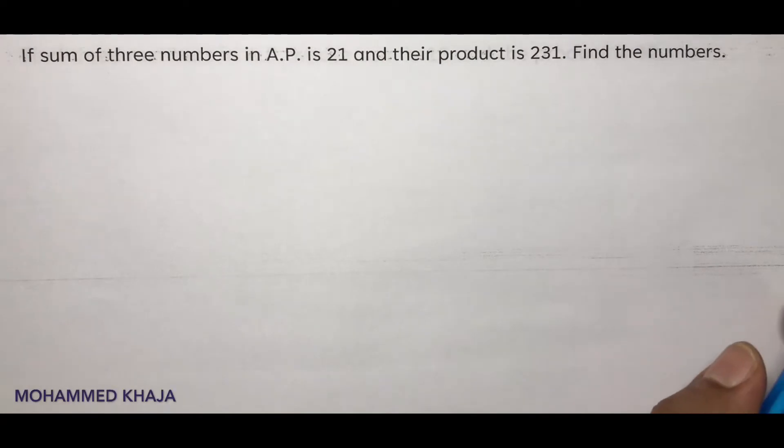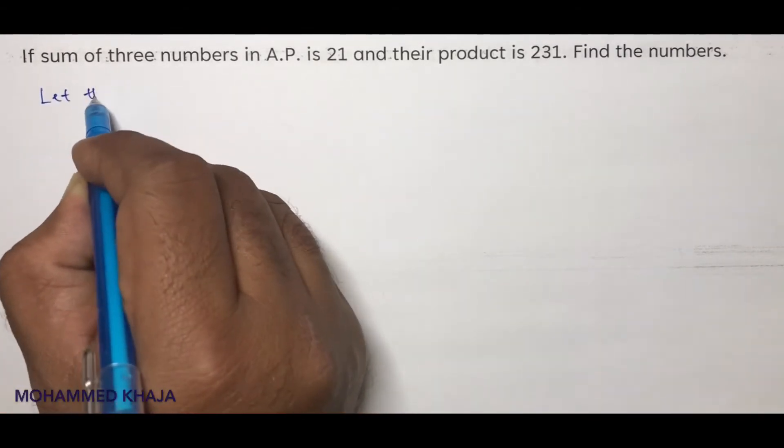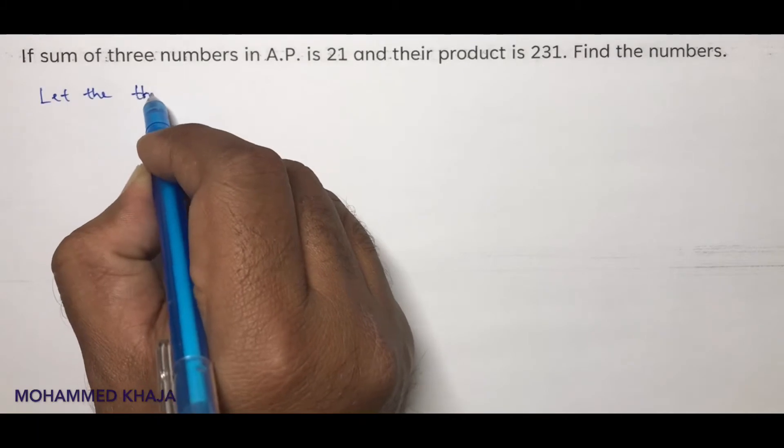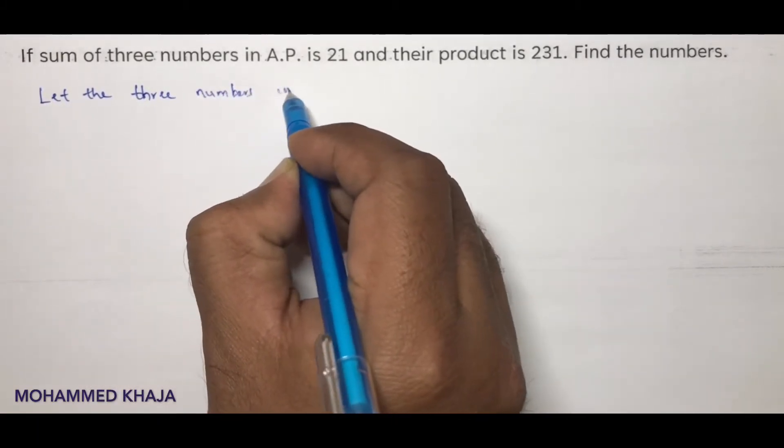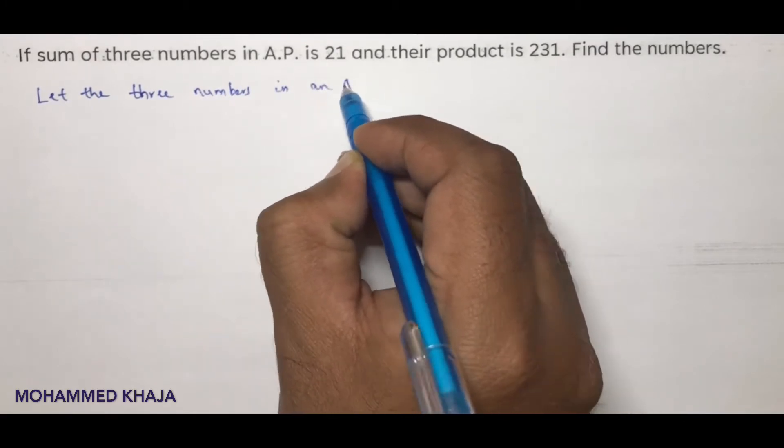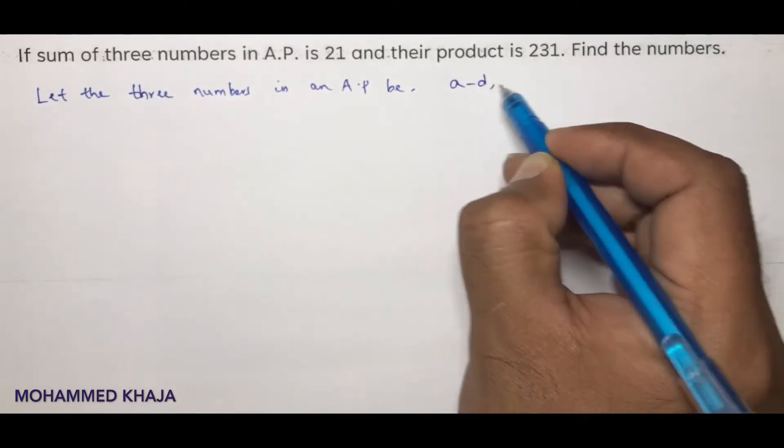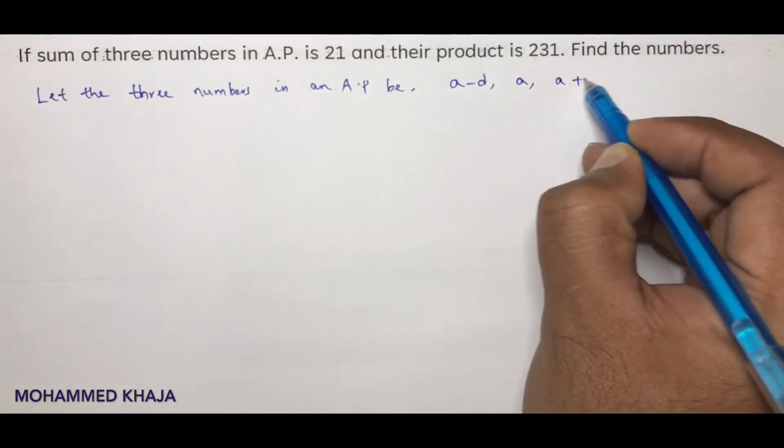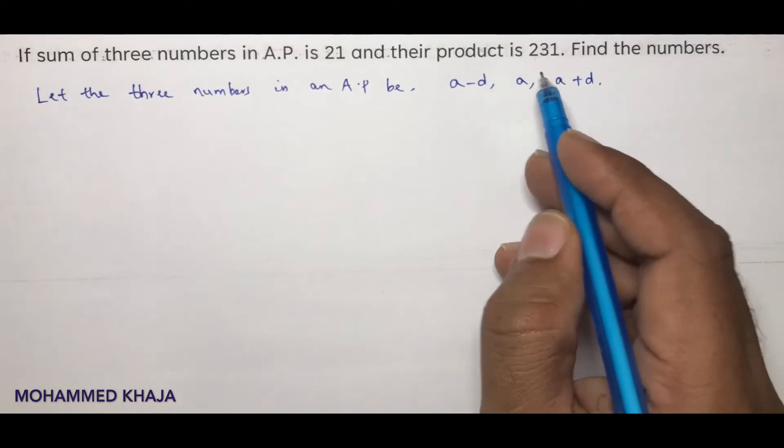If sum of three numbers in an A.P. is 21 and their product is 231, find the numbers. Let the three numbers in an A.P. be a minus d, a, and a plus d. If you take three terms in the form of a minus d, a, and a plus d, the problem will become simple.